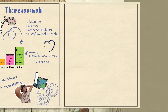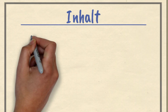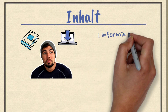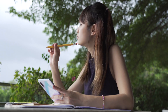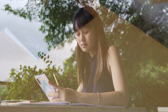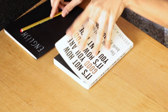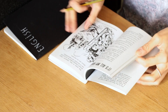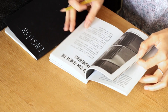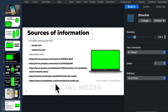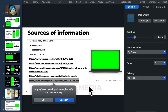We're going now to the Inhalt. Informate yourself. Sobald you have the topic, informate yourself. Die Informationen, die du im Kopf hast, reichen nicht aus. Such also im Internet oder in Büchern nach zuverlässigen Informationen. Vergiss nicht, dass du am Ende deiner Präsentation die Quellen nennen musst. Schreib also jedes Mal, wenn du Informationen verwendest, die Website oder das Buch auf, wo du sie gefunden hast.